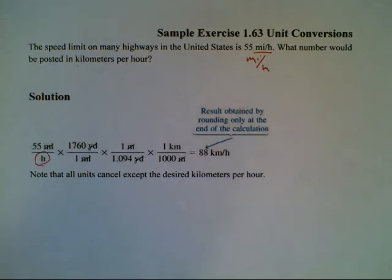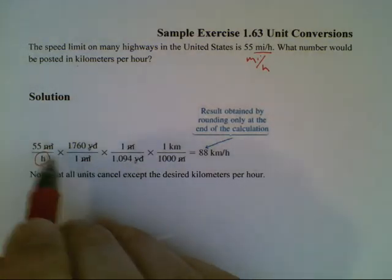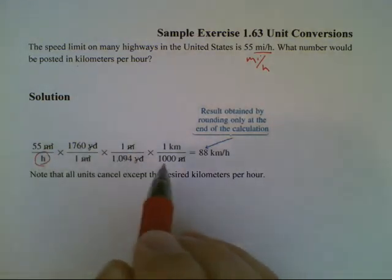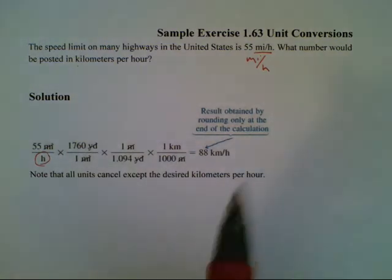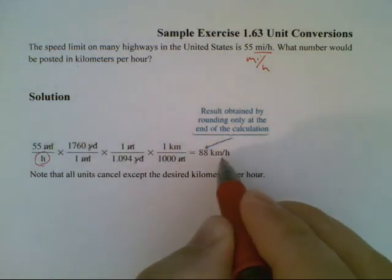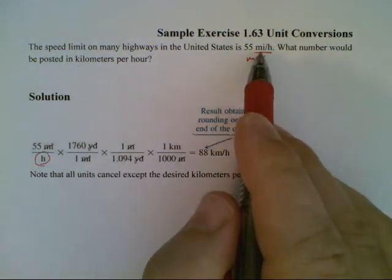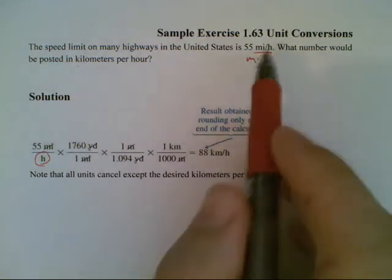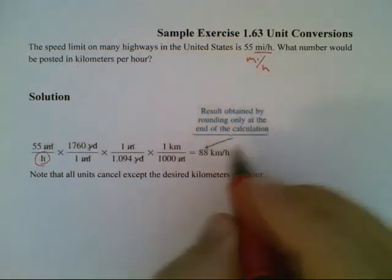That might seem simple, but it throws a lot of students for a loop. The only thing that's changing here is the unit on the distance. Notice at the very end we still have a per hour when we started with a per hour. The only thing that will have changed is the miles are now kilometers.